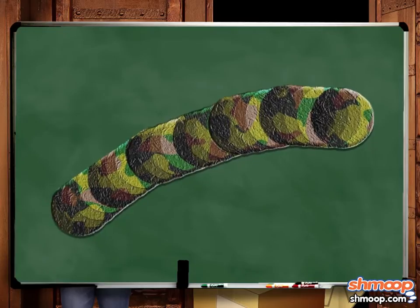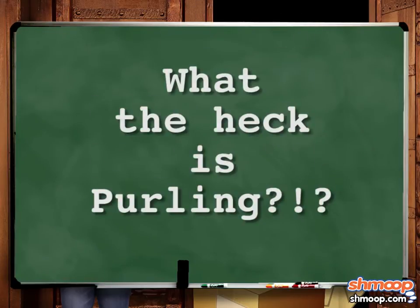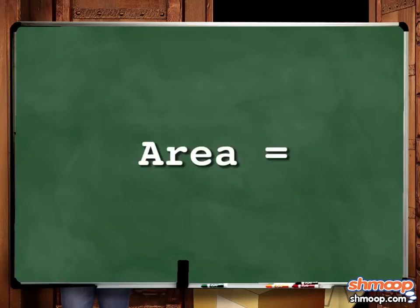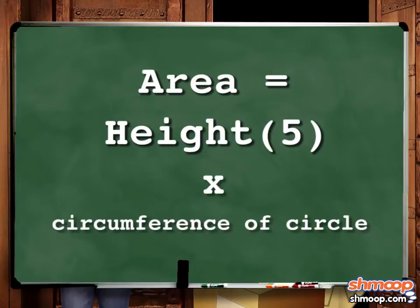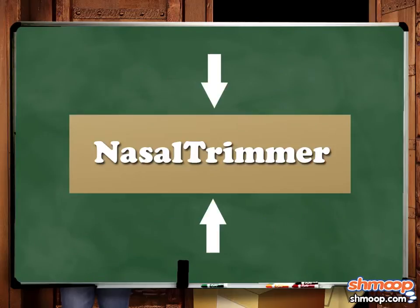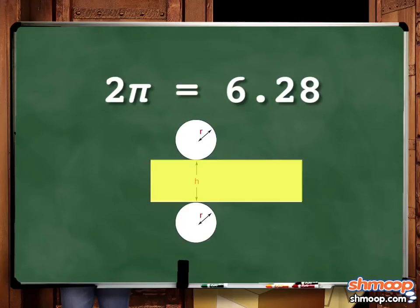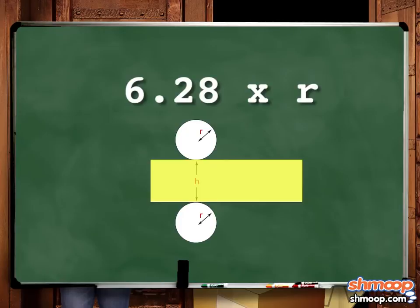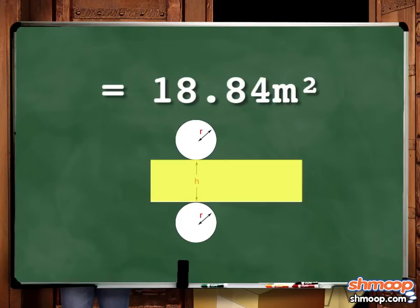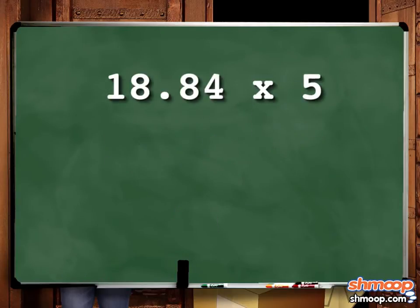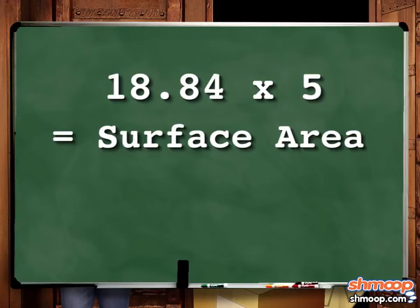This is easier than knitting that trunk warmer — it took forever to figure out what purling means. But we still have to find the area of the middle part of the cylinder, which is a rectangle when squashed flat. To find this area, we'll need to multiply the height, which we know is 5, by the circumference of the circle, which makes up the top and bottom edge of the rectangle. We can find this using the formula 2 pi r. 2 times pi is approximately 6.28. 6.28 times r, which is 3, is 18.84. Now we just multiply that by the height, 5, to get the surface area of the middle part of the cylinder, which is 94.2.